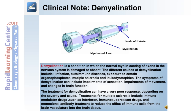A clinical note on demyelination: demyelination is a condition in which the normal myelin coating of an axon in the nervous system is either damaged or absent. The different causes of demyelination include infection, autoimmune diseases, exposure to certain organophosphates, multiple sclerosis, and leukodystrophies.